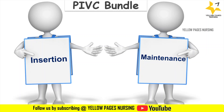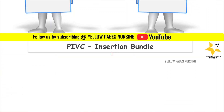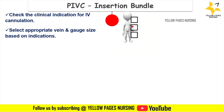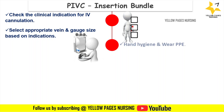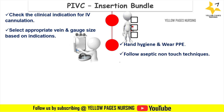The insertion bundle begins with checking the clinical indication for IV cannulation — cannulation should be done only when truly necessary. Next, select an appropriate vein and gauge size based on indications. Then perform hand hygiene, wear personal protective equipment, and follow aseptic non-touch technique during insertion, ensuring key parts of the cannula are protected from contamination.